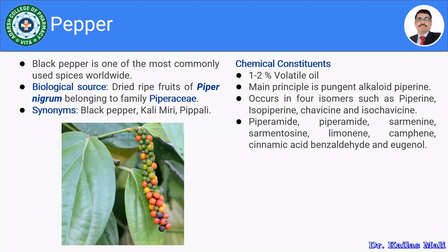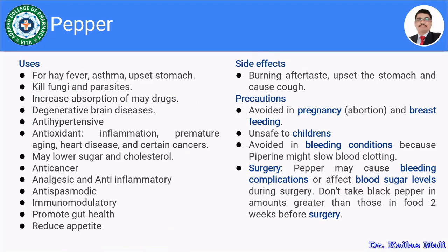It also contains sarmentine, sarmentosine, limonene, camphene, cinnamic acid, benzaldehyde, and eugenol. These are some of the other chemical constituents present in pepper. Let us move towards the health benefits and uses of pepper.